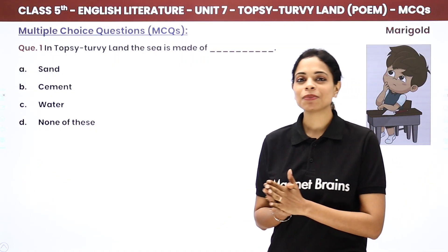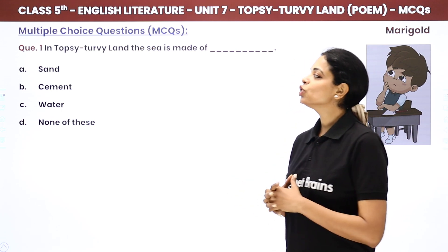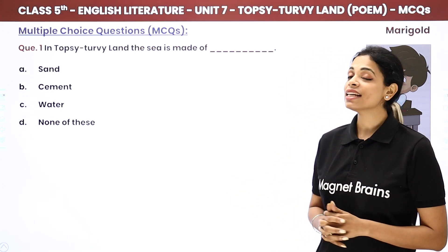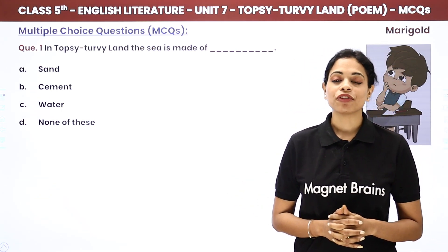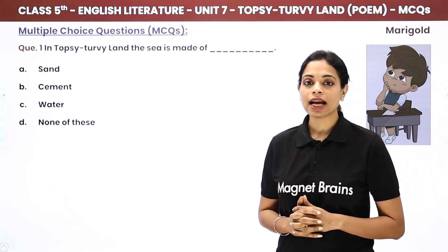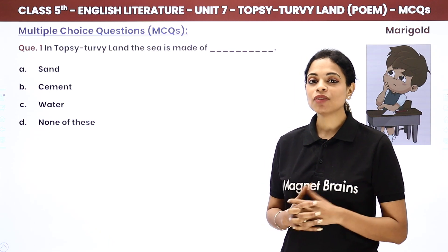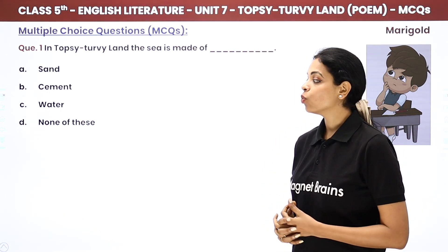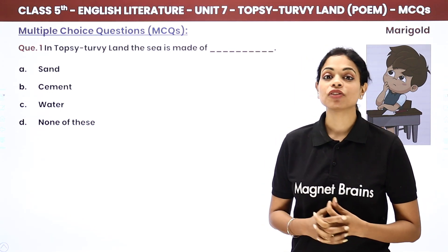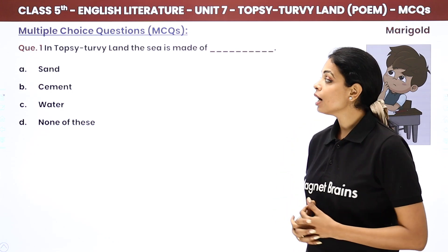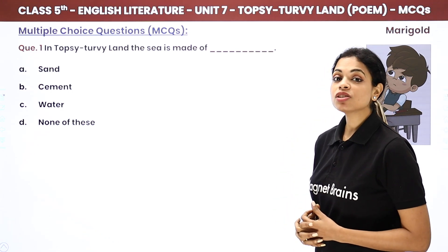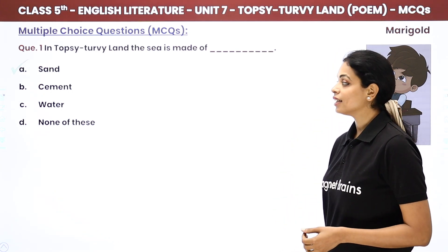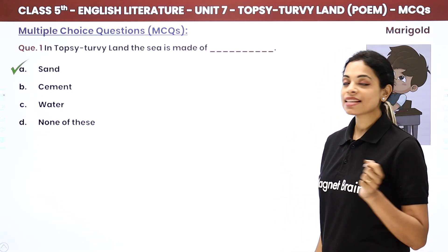First question, here it is for you. In Topsy-Turvy Land, the sea is made of — what is the sea made of in Topsy-Turvy Land? Sand, cement, water, or none of these? Here, the sea is made of sand. The answer is sand.